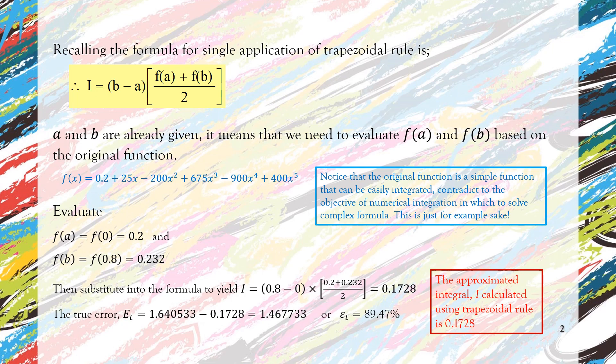Then we can calculate the true error by subtracting the actual value or true value from the approximated value that we just obtained. As we can see, the value is quite large: 1.467733. We can also calculate the percentage true error, and as we can see and expected, it is large: 89.47%.